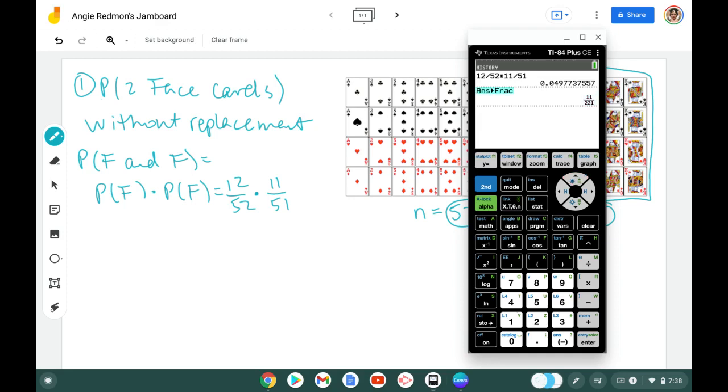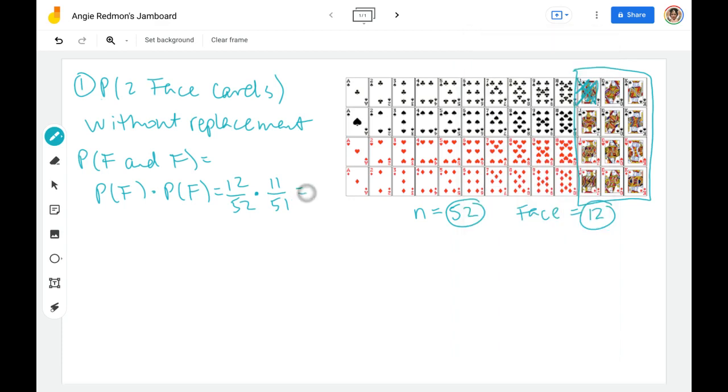I could also do it this way. So if I go up and choose that again, I know I want a reduced fraction from the very start. I type this in. I go to math, choose that first, convert to fraction, hit enter, and it gives me the 11 over 221. So my probability about 5%, but that's going to be 11 over 221.